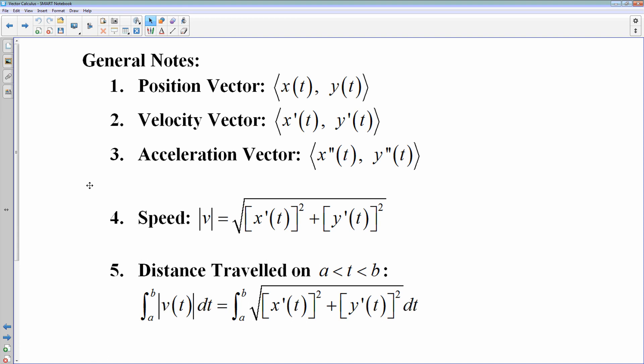Some general notes on vectors in calculus. If you have a parametric equation that represents position, it can be written in vector form, ⟨x(t), y(t)⟩. Velocity and acceleration are simply first and second derivatives, as you would expect.